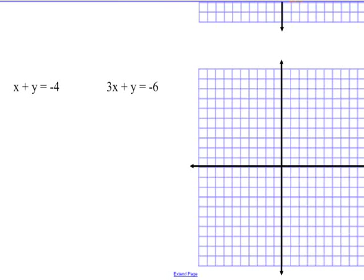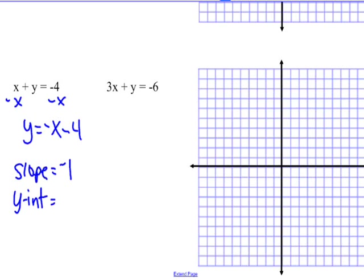The next one: x plus y equals negative 4. We want to solve for y. Subtract x: y equals negative x minus 4. Our slope is negative 1, our y-intercept is negative 4. Remember with your slope that there should be no x attached to that. It's just the number negative 1.